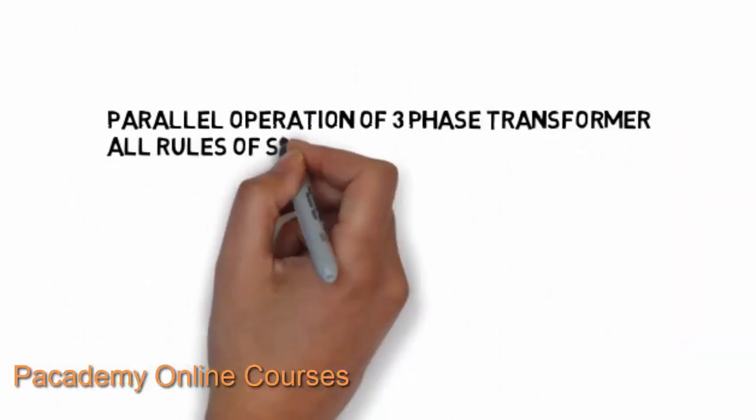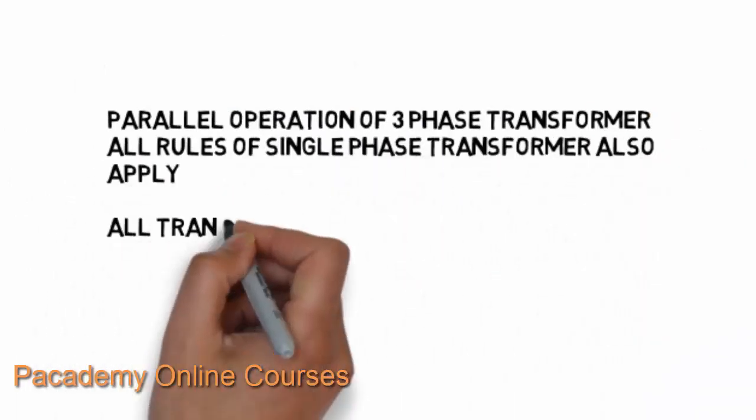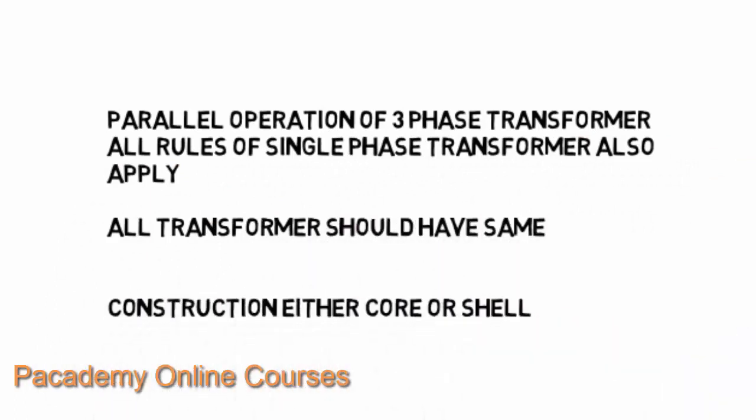For the parallel operation of three-phase transformers, the same rules that apply to single-phase transformers also apply. Additionally, all transformers should have similar construction — that is, if two units are used, both should be core-type transformers or both should be shell-type transformers.